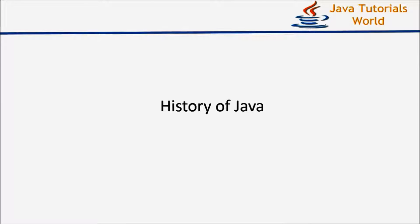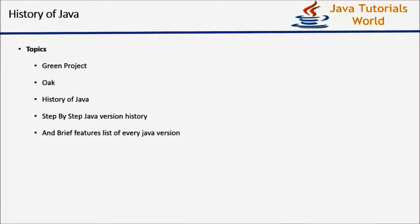Hi there, this is Raju. Welcome to my YouTube channel, Java Tutorials World. Today we are going to discuss about the history of Java. As part of history of Java, I am going to talk about the Green Project, Oak, and history of Java. Apart from this, I'm also going to discuss about Java version history, which covers when each version of Java was released and what features were added, and the differences between each version of Java.